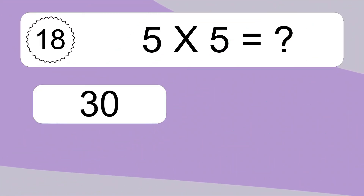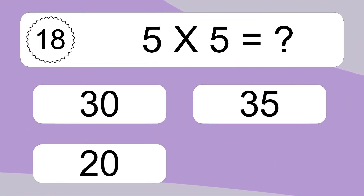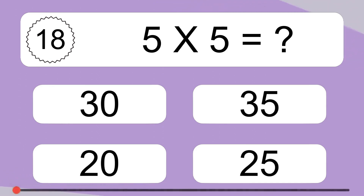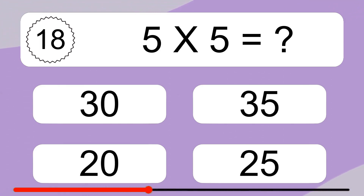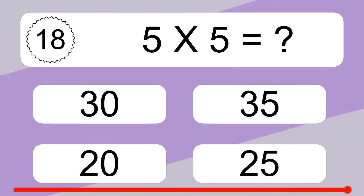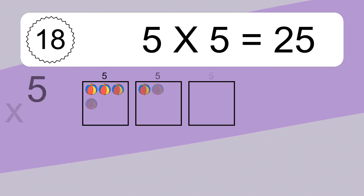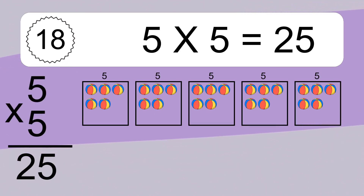5 times 5 equals what? 5 times 5 equals 25.